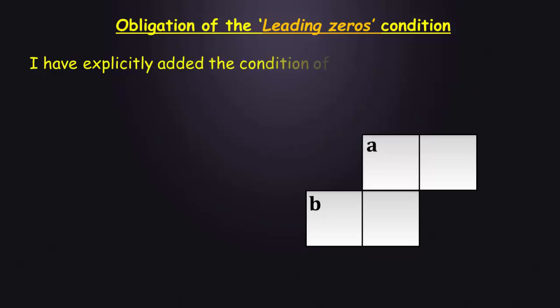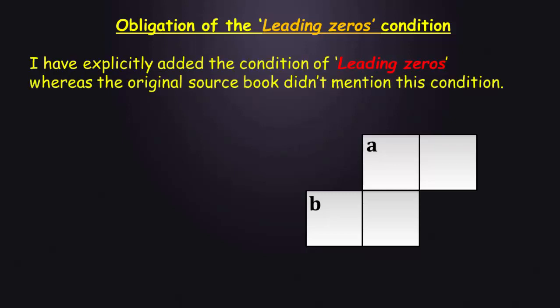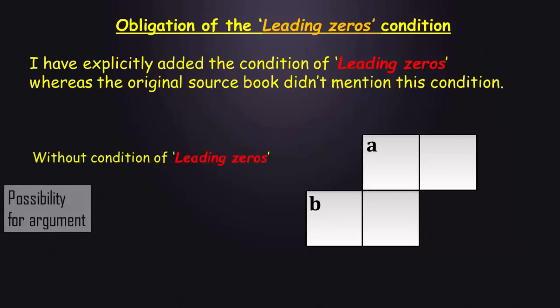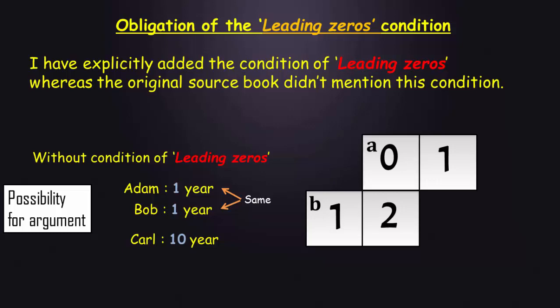I have explicitly put the condition of leading zeros in the puzzle. Whereas in the original source of this question, this condition was not there. In that case, one can argue that Adam and Bob are 1 year each and Karl is 10 years. That makes the solution ambiguous.